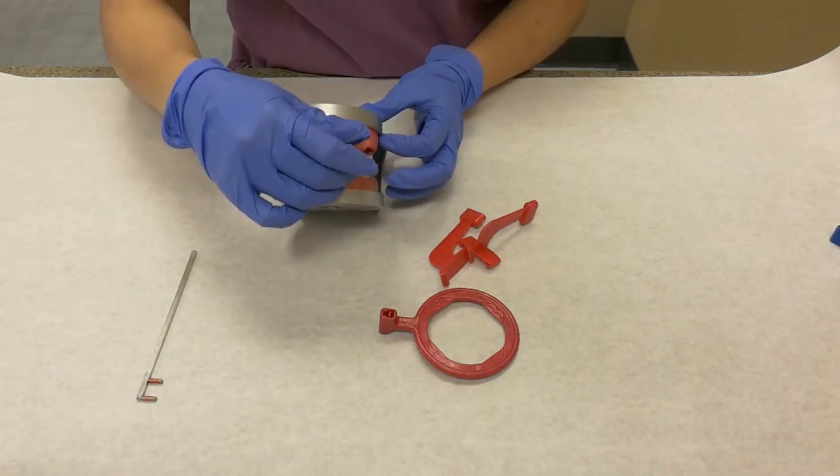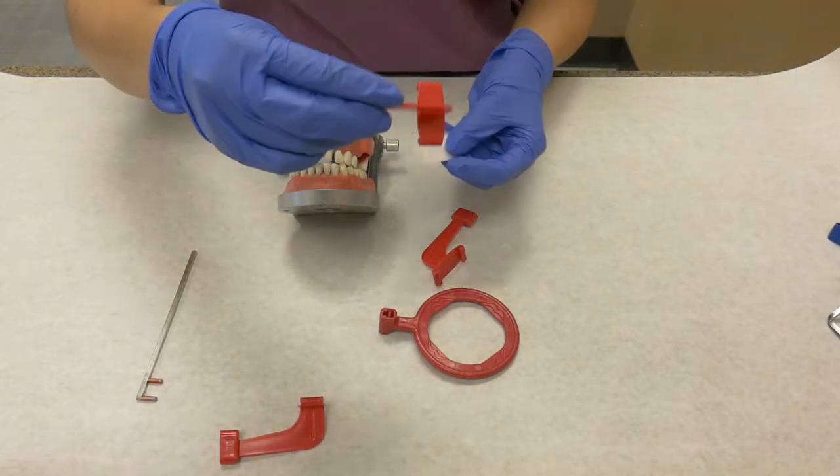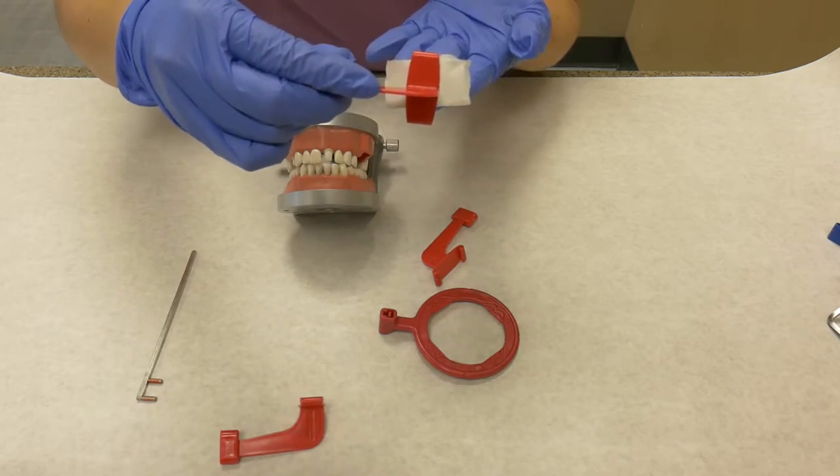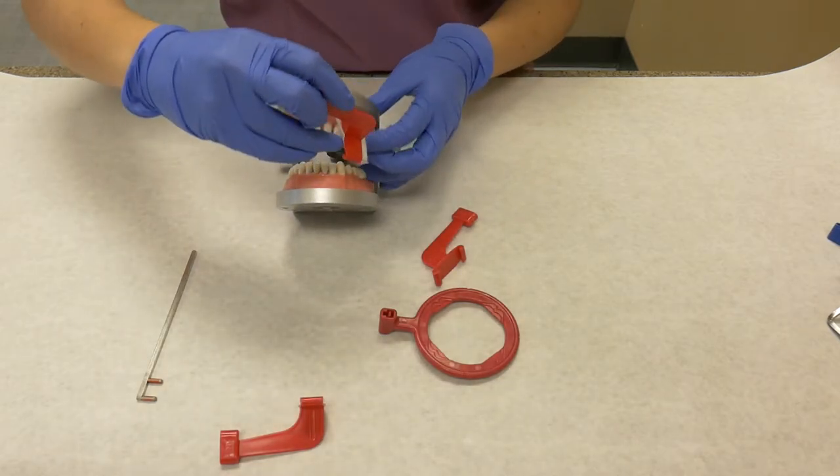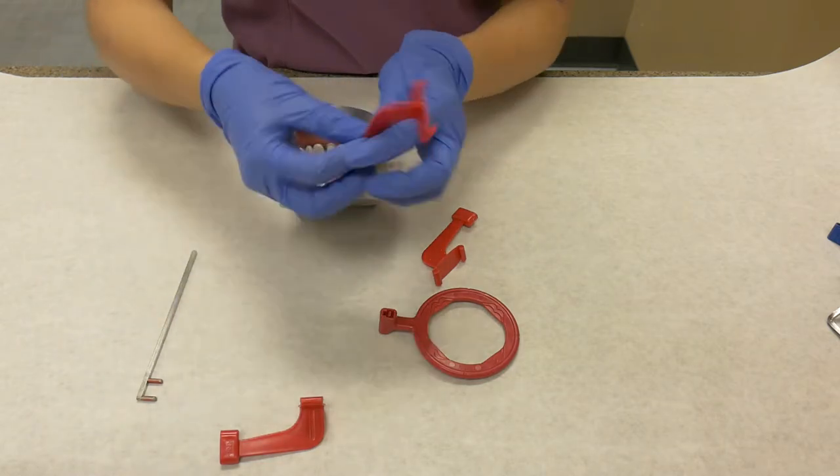This is how the bite plate will be placed in the patient's mouth. The receptor will be placed horizontally, and the patient will bite on the long, flat portion of the bite plate.